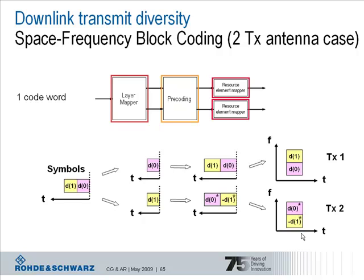Antenna one TX1 transmits the symbol D0 at a certain subcarrier. At the same time antenna two transmits the symbol D1 on this subcarrier with a special coding applied. And looking at the other subcarrier it is vice versa: TX2 transmits D0 and TX1 transmits D1. So we transmit a redundancy of information but achieve increased robustness, with no increase in throughput or data rate compared to the single antenna case. This is transmit diversity.